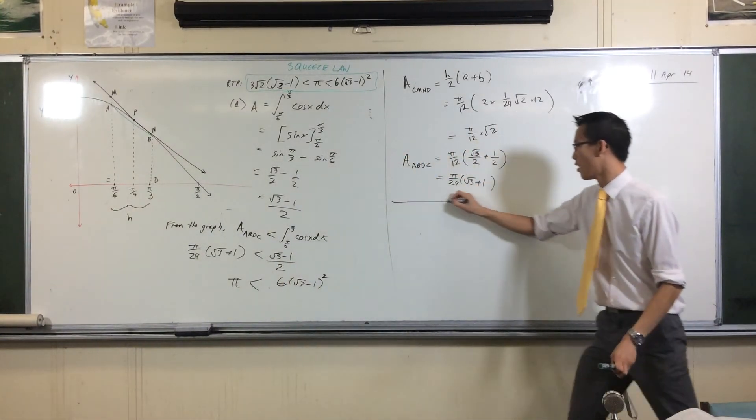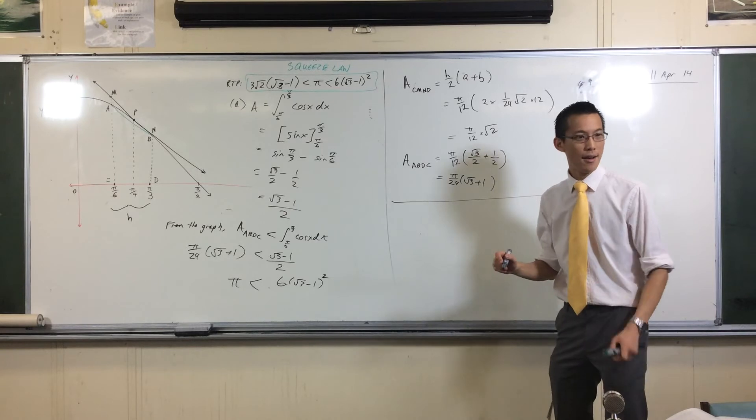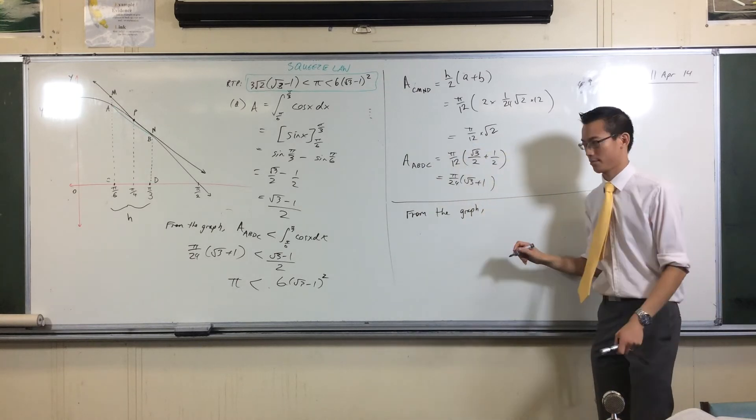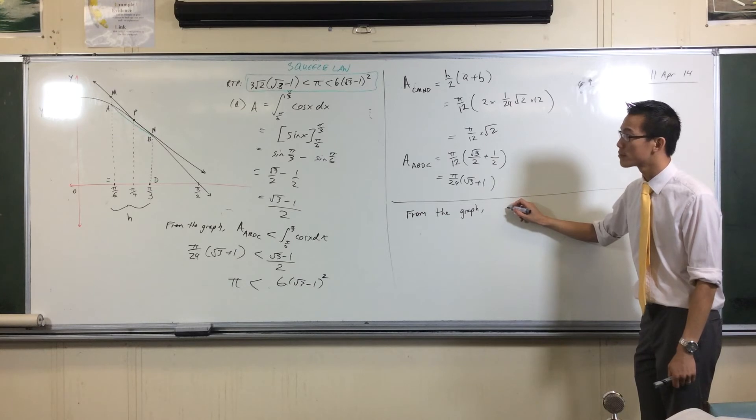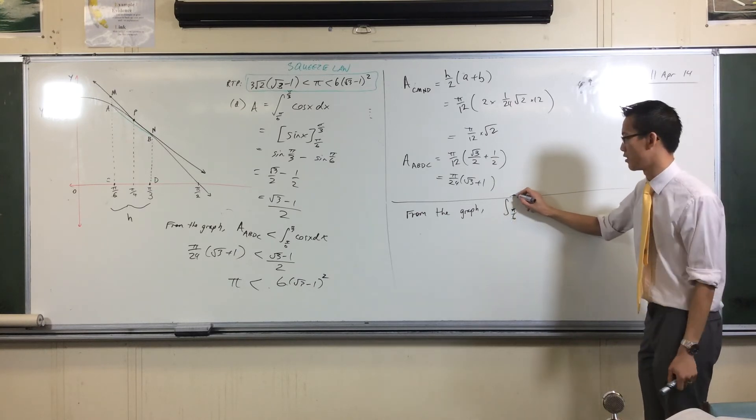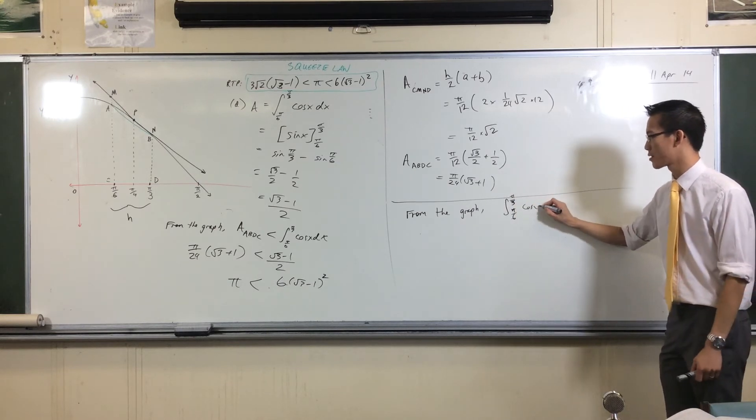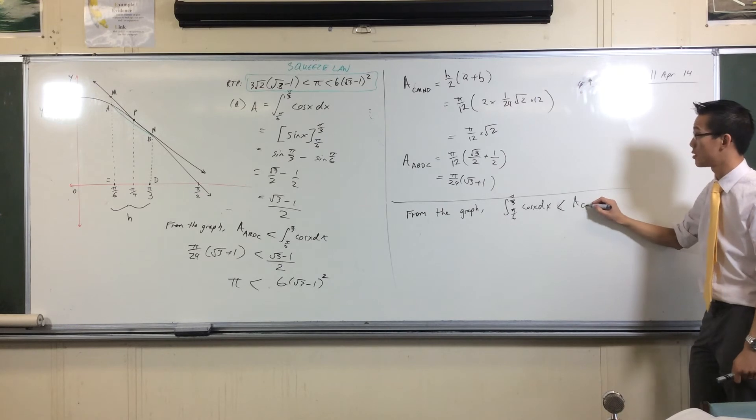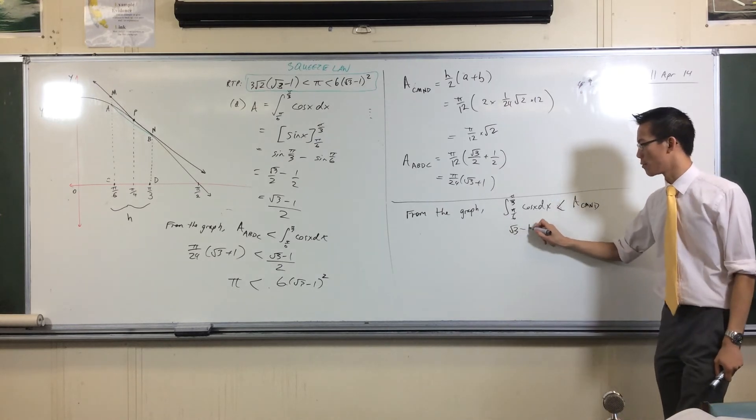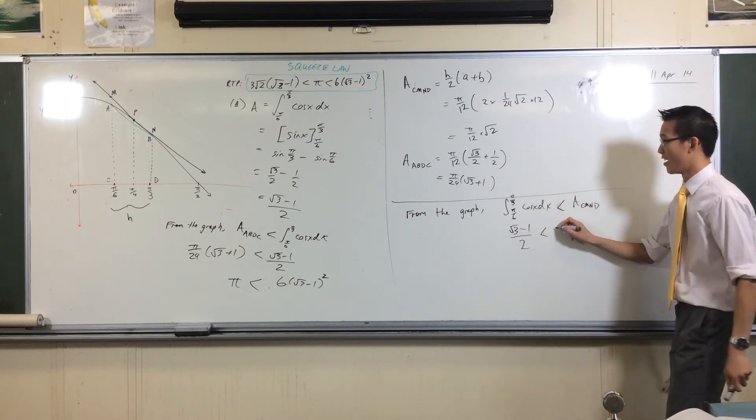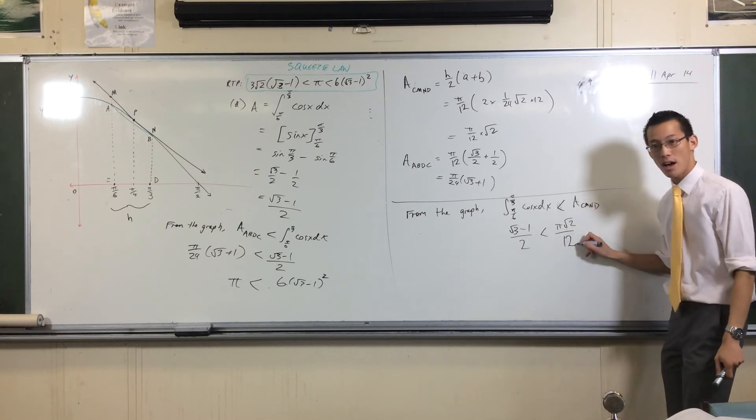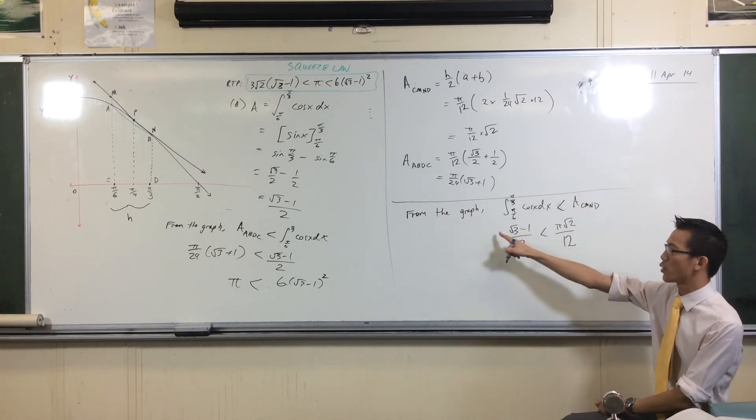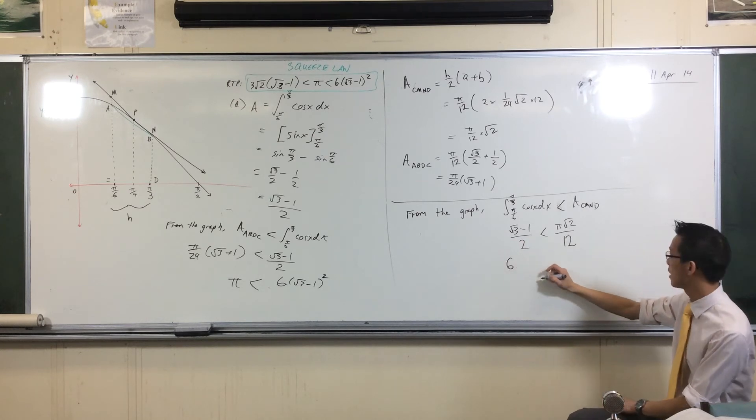So now you can tell me what I should do on the other side. What should I write from the graph? What inequality? I'm going to do the integral and then I'll put down the actual value. So the integral from π/6 to π/3 of cos x. That precise area underneath the curve. Sorry, that's not equal to, it's less than the bigger trapezium. CMND. Now I'll sub in my value. (√3 - 1)/2 is less than that mess there. π√2/12. What did I want again? I wanted π being the subject. So I'll get these two guys over the other side. That 12 would go over and become a 6 again. The √2 will go down the bottom.